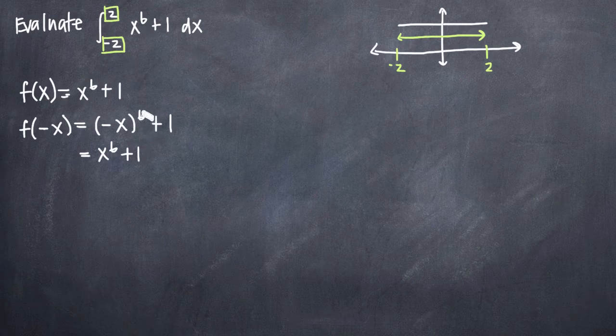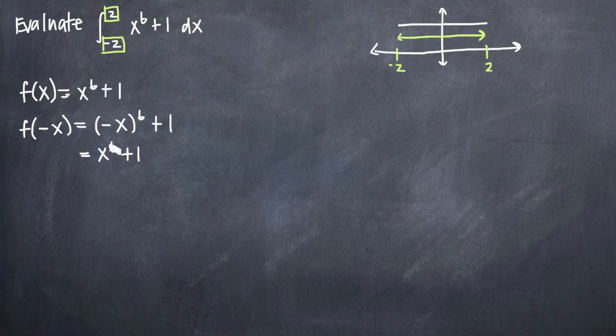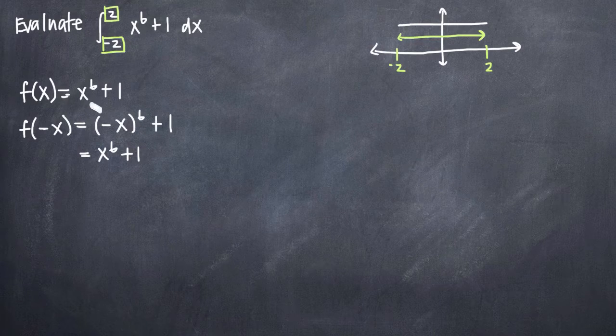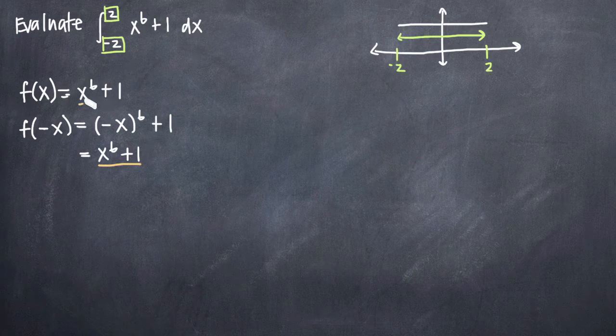Whenever we raise negative x to an even power, we're going to end up with a positive sign here and just x to the 6th. So what we see is that we actually end up with the exact same function as we did when we started with our original function.